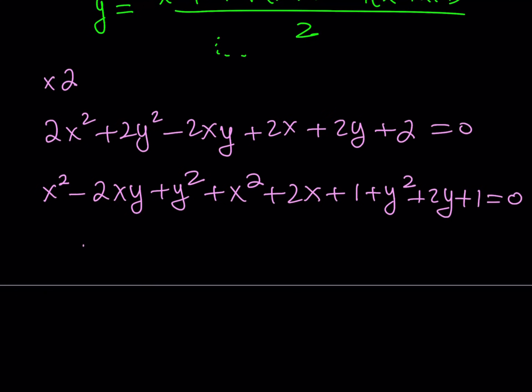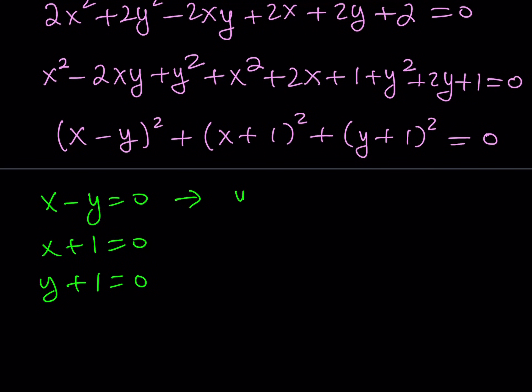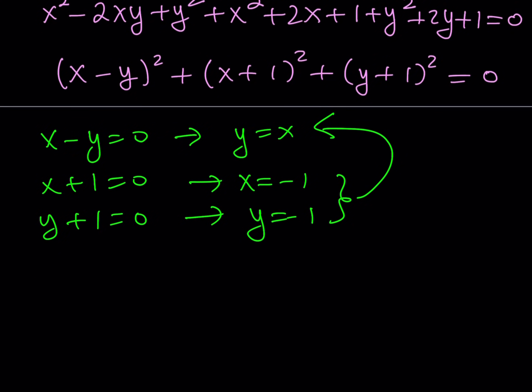This gives me x minus y quantity squared, and then x plus 1 quantity squared plus y plus 1 quantity squared. Now, if you have the sum of perfect squares being equal to 0, then each term needs to be 0. Because you can't get a 0 by adding non-negative terms unless they are all 0. So this implies, that's why I really love this method, because one equation gives you three equations at the same time. This indicates that x minus y is equal to 0, x plus 1 is equal to 0, y plus 1 is equal to 0, all at the same time. And the first one gives you y equals x, the second one gives you x equals negative 1, and the third one gives you y equals negative 1. The second and the third equation already verify the first one, so we're good. Because we have specific values.